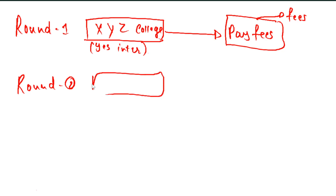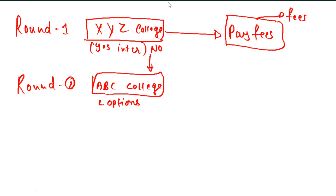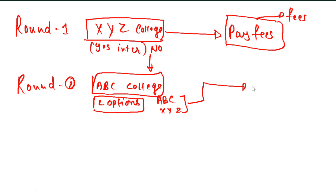In round two, suppose college ABC is allotted to you. Now you have two options - either you select XYZ or you go to the next round. If XYZ is better than ABC, you can decide. In round three, whatever college is allotted, you must select one - either ABC or XYZ. You have to pay fees and take admission.